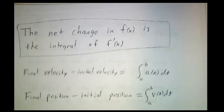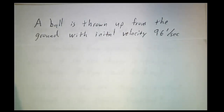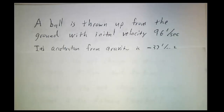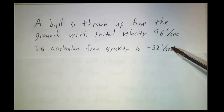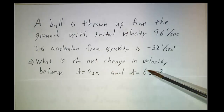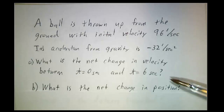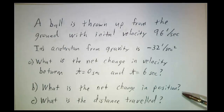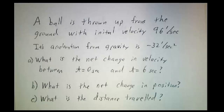Let's do a physics problem to illustrate these ideas. We're on the ground, we grab a ball and throw it upward with an initial speed of 96 feet per second. Gravity is acting on it, so it accelerates downward at negative 32 feet per second squared. We want to know: what is the net change in velocity in the first six seconds of its flight? What is the net change in position in the first six seconds? And how far does the ball travel between launch and six seconds later?